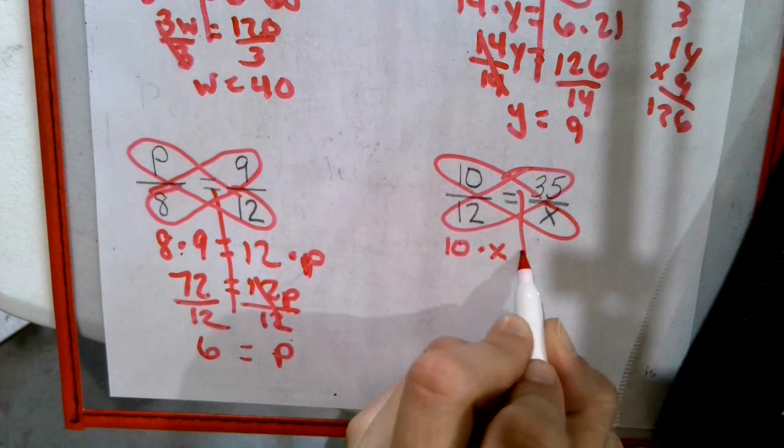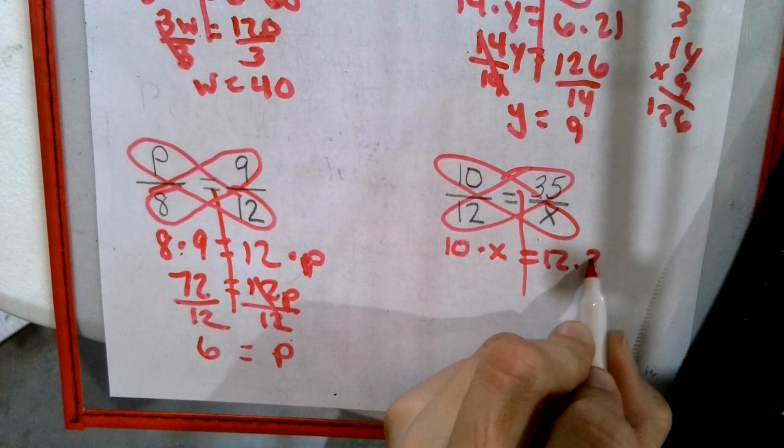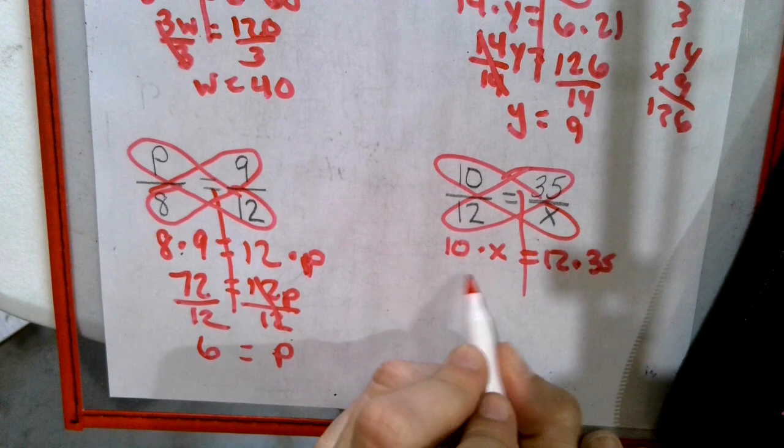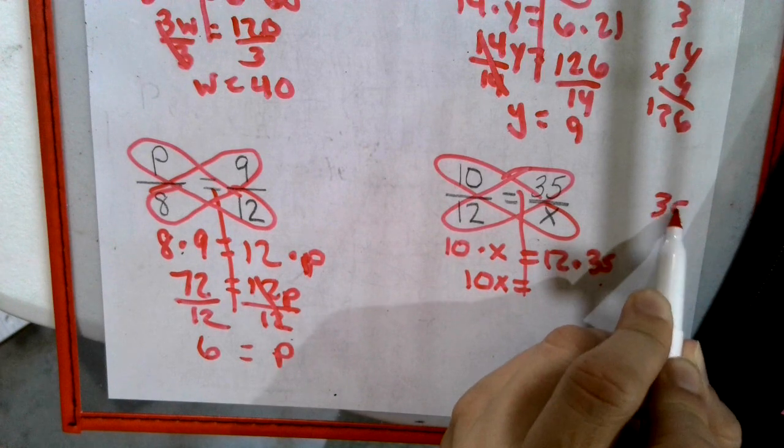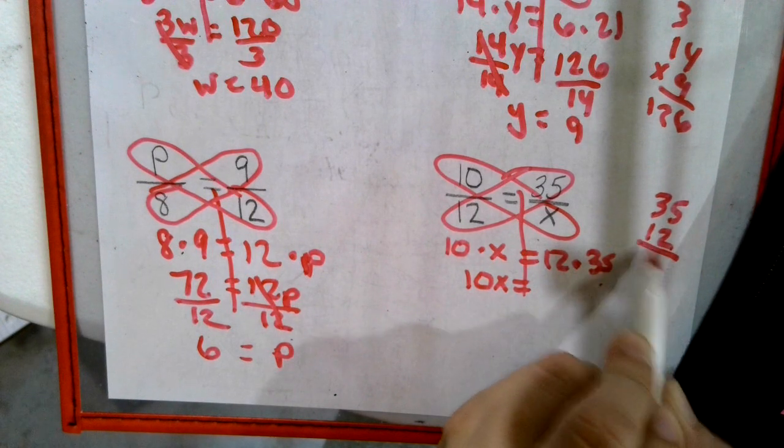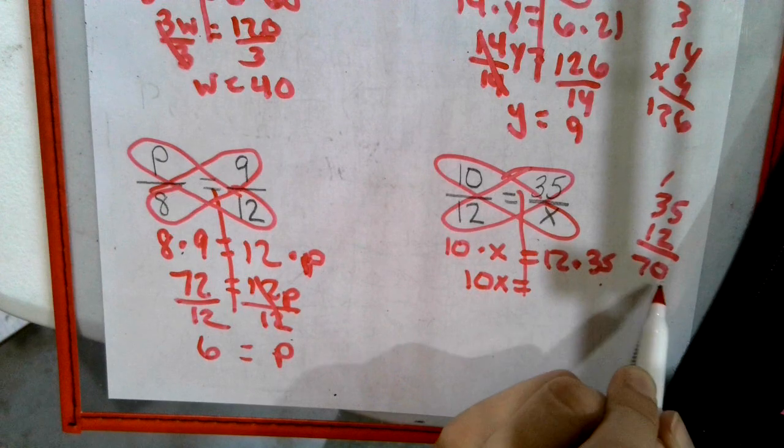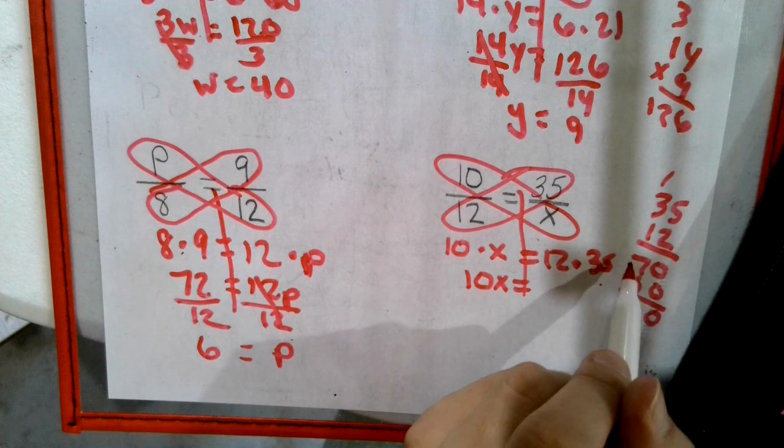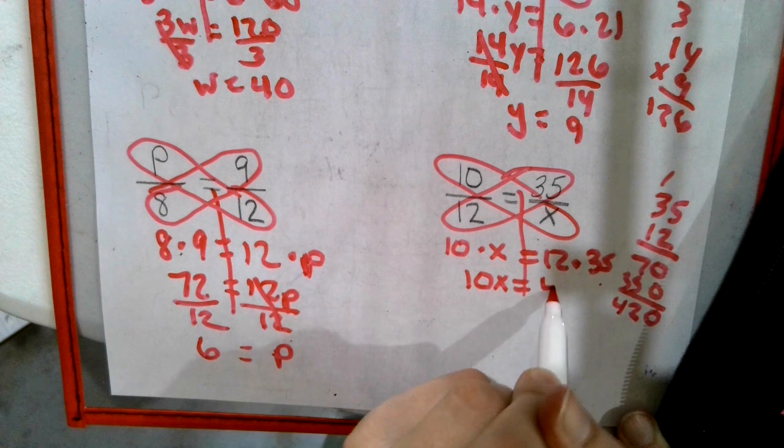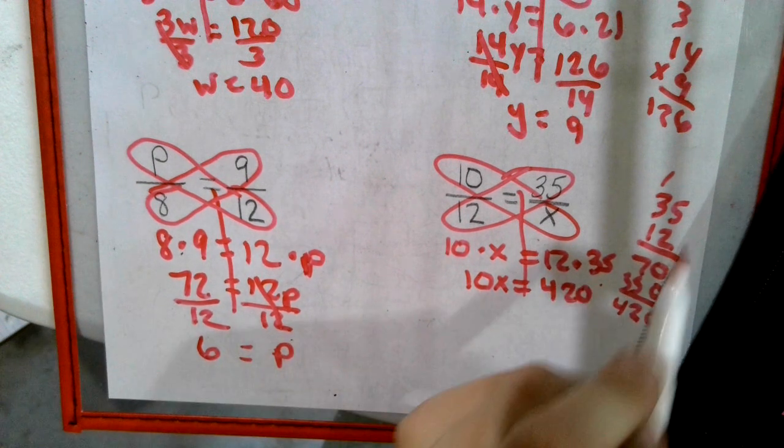10 times X equals 12 times 35. Number and letter shoved together. We've got to do the math on that. So we're going to take 35, we're going to multiply it by 12. 10, 7, 0, 5, 3. 0, 12. Let me just check our math. 10, 6, 7, 0, 5, 3. Yep.